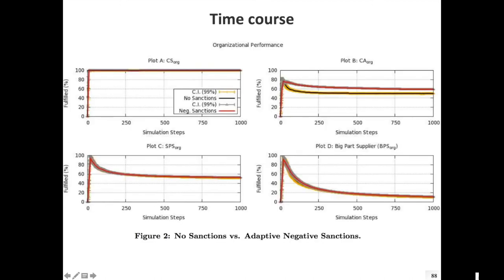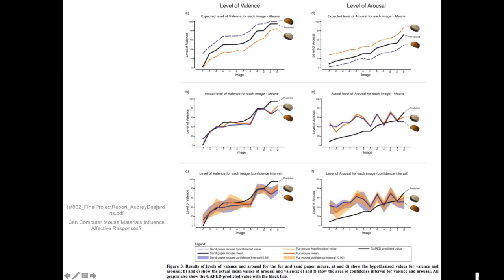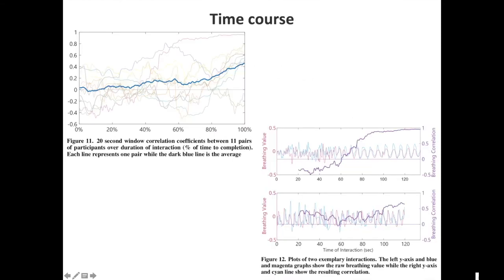For time course plots, typically you just have time on the x-axis, and there are different ways of doing this. Depending on the data, you can also include confidence intervals. Here's another example going back to the furry versus sandpaper mouse — you can also show predictions and what you have in there. Here's breathing synchronization data from individual participants and the overall average. What's nice is that you can see the main pattern clearly while still seeing the individual data without it being too distracting.